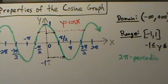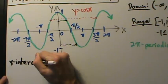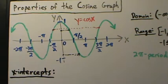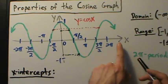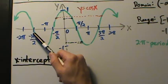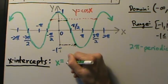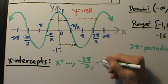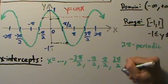Let's talk about the intercepts — starting with x-intercepts, which are the values of x where the graph is on the x-axis. Those are: ..., negative 3π/2, negative π/2, π/2, 3π/2, 5π/2, 7π/2, and so on in both directions. So x equals ..., negative 3π/2, negative π/2, π/2, 3π/2, ...